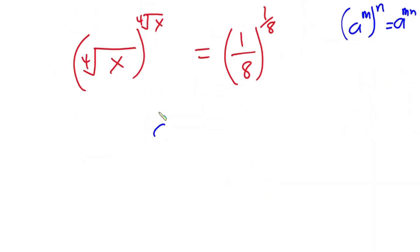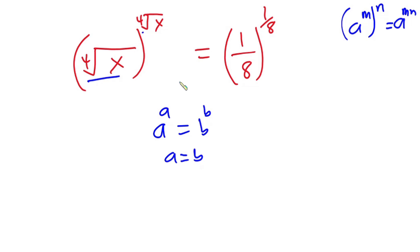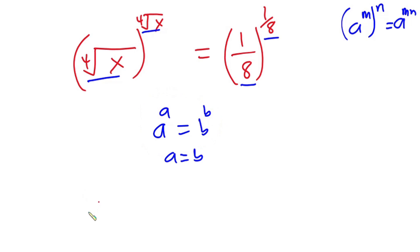Now, if I have a to the power a equals b to the power b, then I can say that a is equal to b. From the left side, you can see that the base is equal to the power, and on the right side too, the base is equal to the power. So it follows this same pattern. Therefore, I can say that the fourth root of x is equal to 1 over 8.